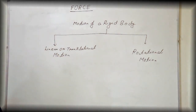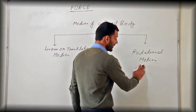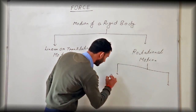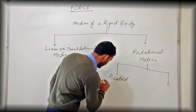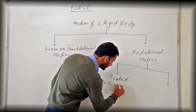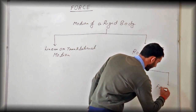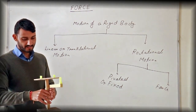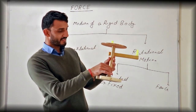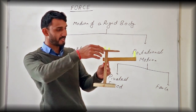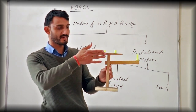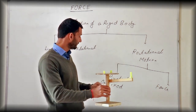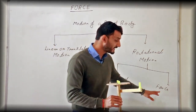We are going to discuss rotational motion in our course. For this kind of motion we need two things: first, the body must be pivoted or fixed, and then we need force to be applied. The body is pivoted at a point, which you can consider as the axis of the body, and the body rotates along this axis when a force is applied.